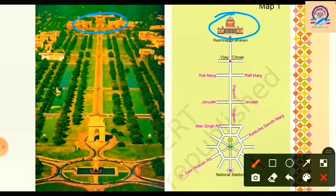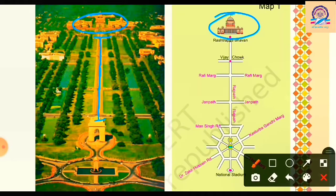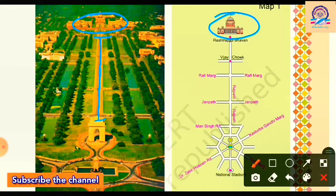Rashtrapati Bhavan is the official residence of the President of India. If anyone asks what Rashtrapati Bhavan is, you are able to tell them it is the official residence of the President of India. This chapter is very useful — it enables you to read any map of any country or any area.